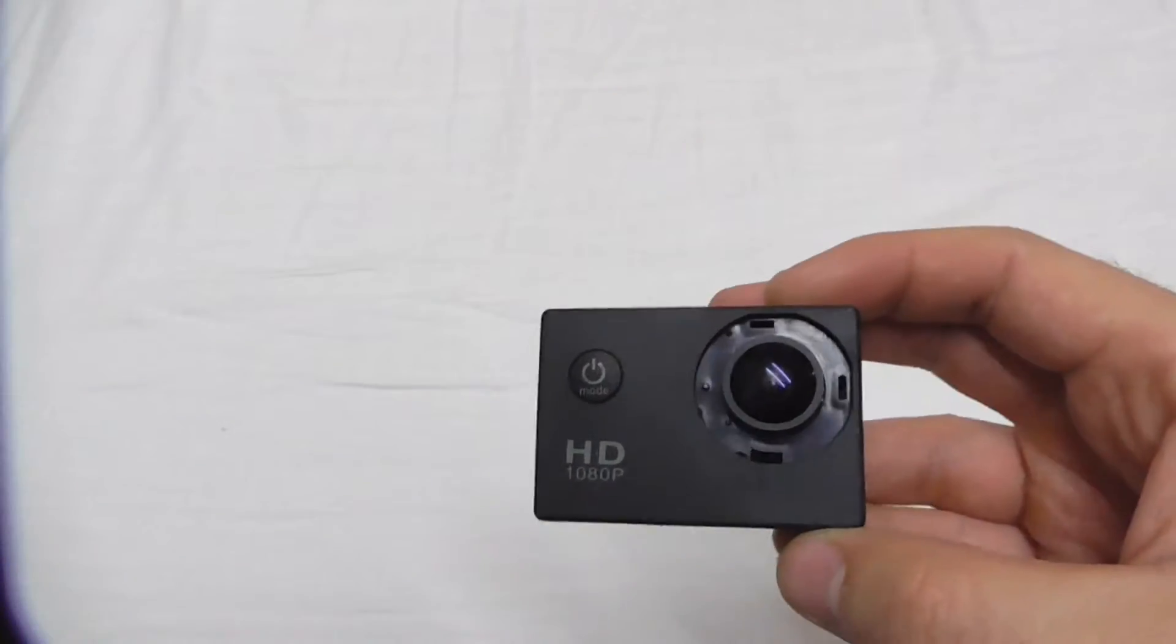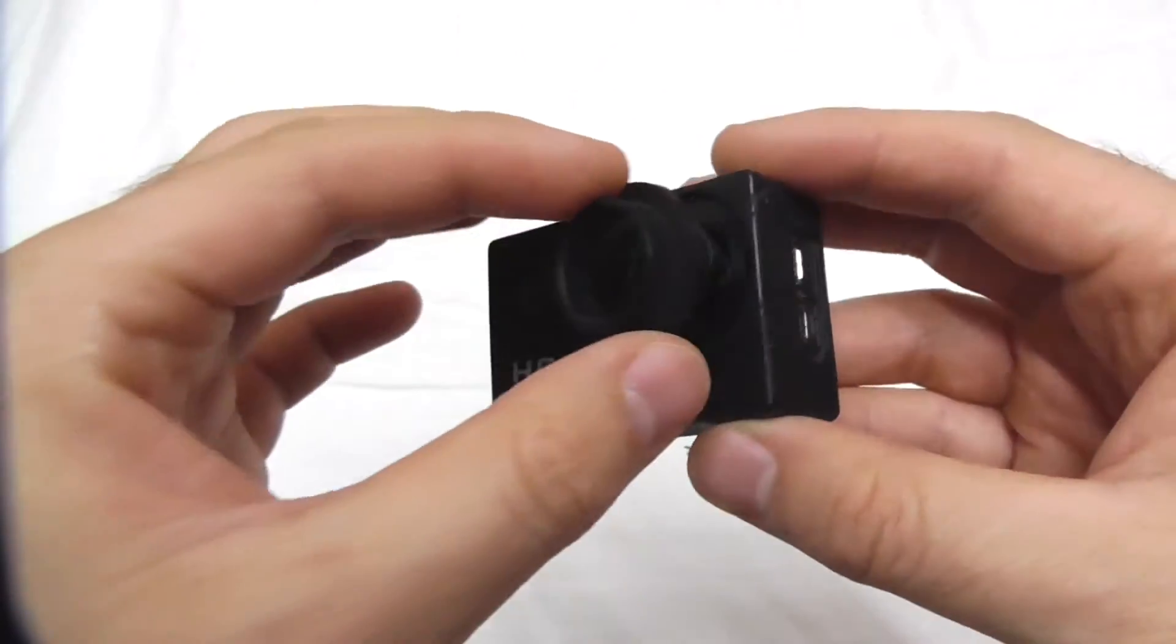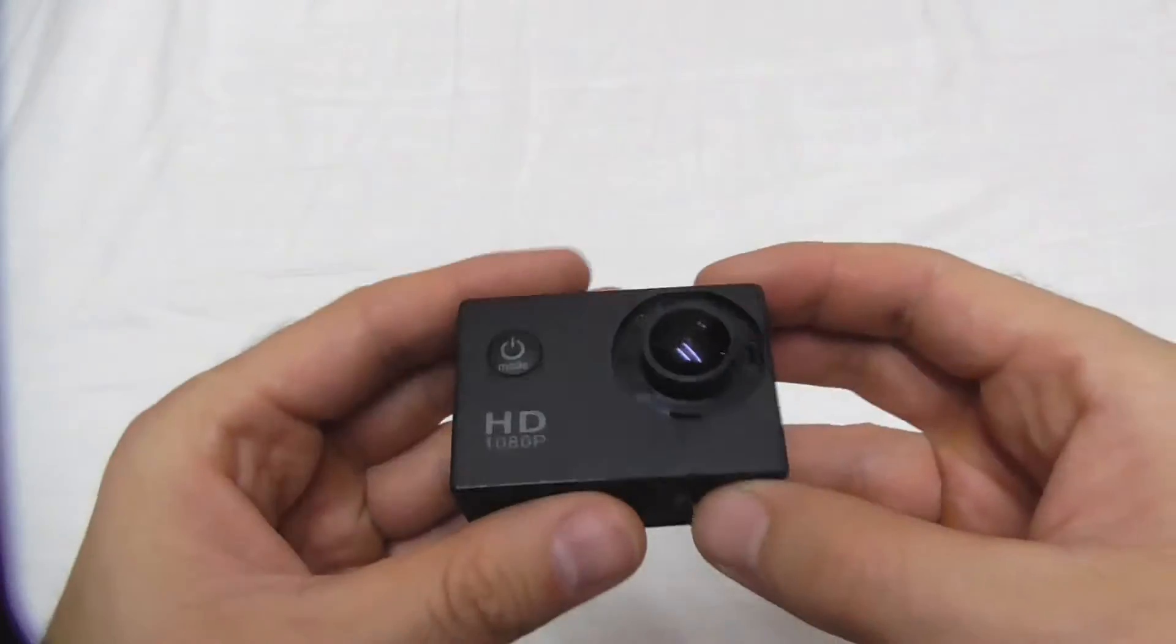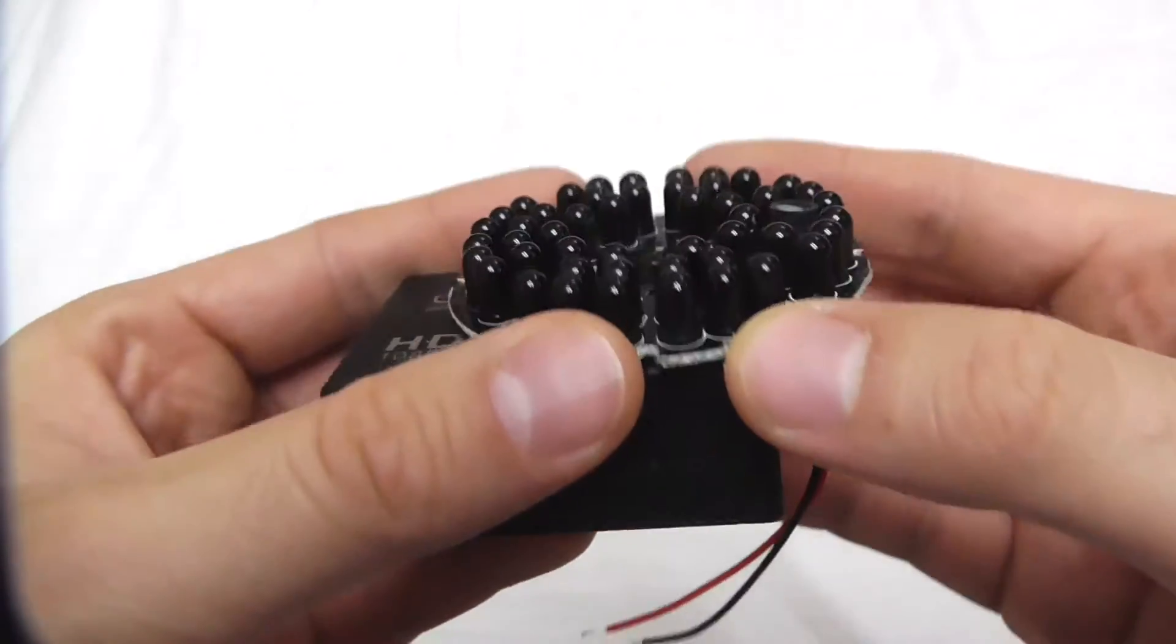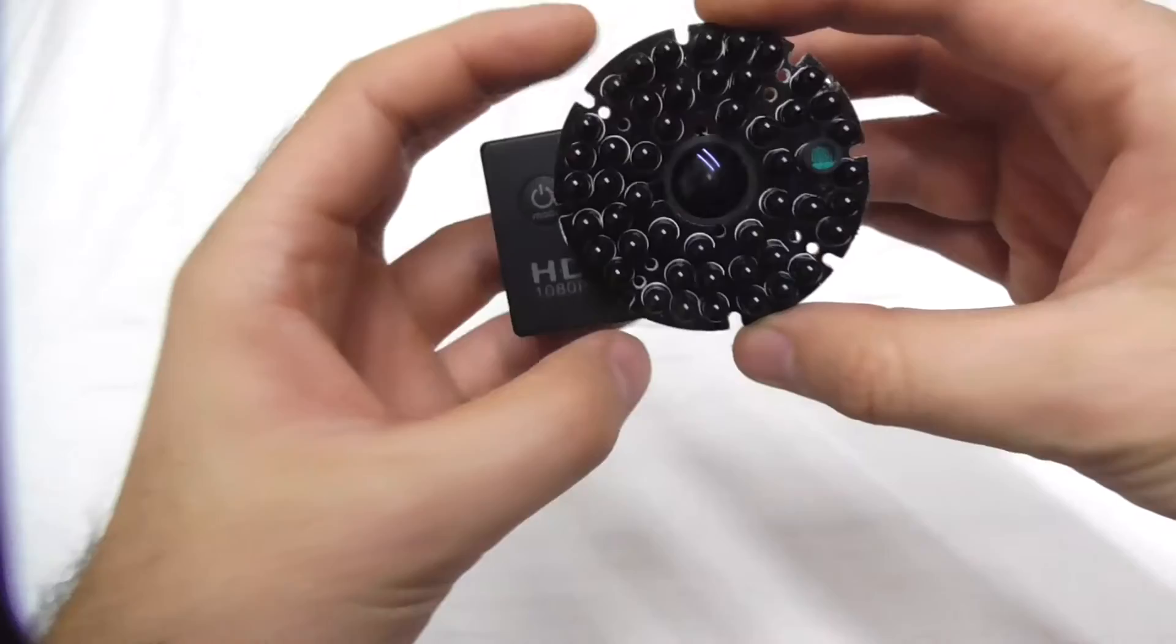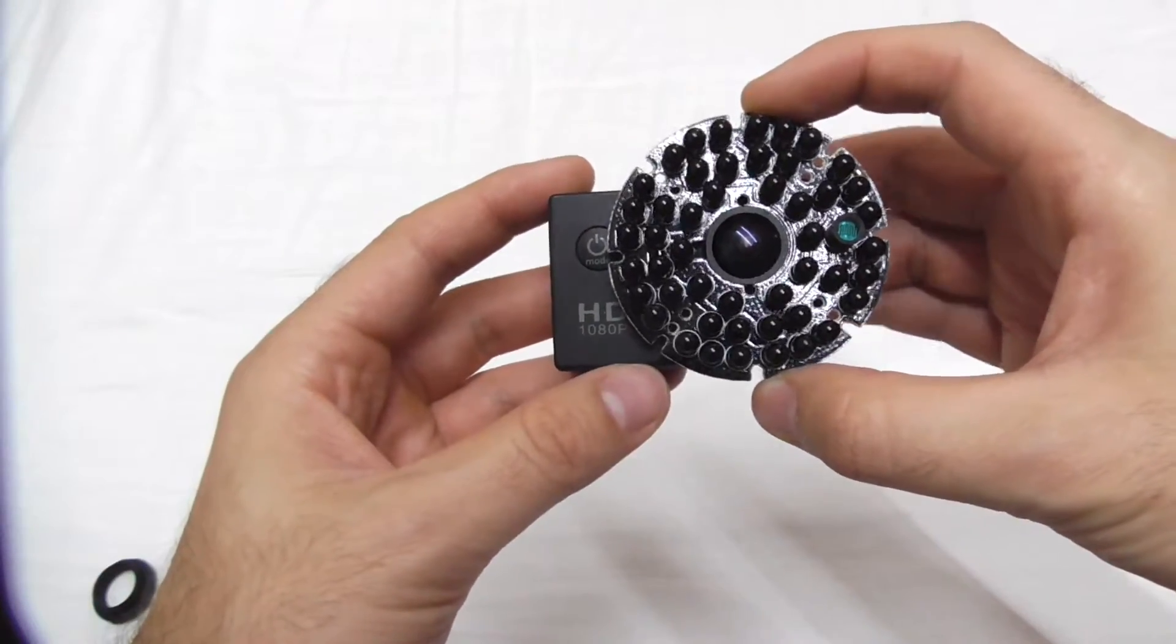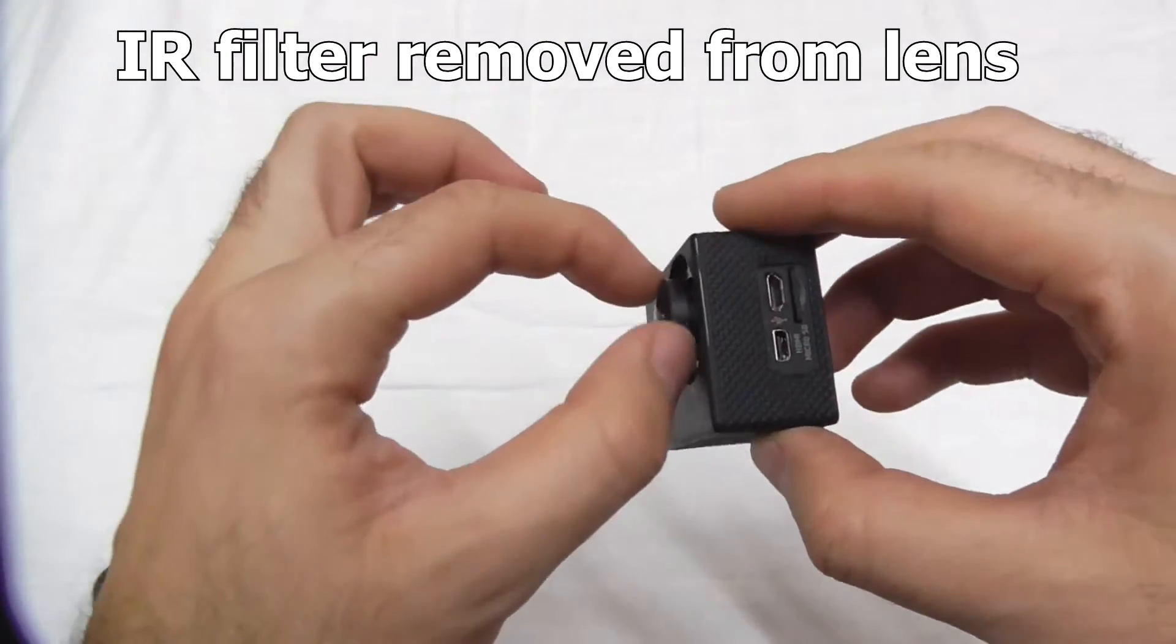Here's an action camera, it's an SJ4000. If you remove this cover from the lens, just simply pull it out, then you can actually place this one there. Of course the pins won't allow it to go down but it is okay. You can use it as a night camera, especially if you remove the infrared filter from the lens, which is removed from this one.